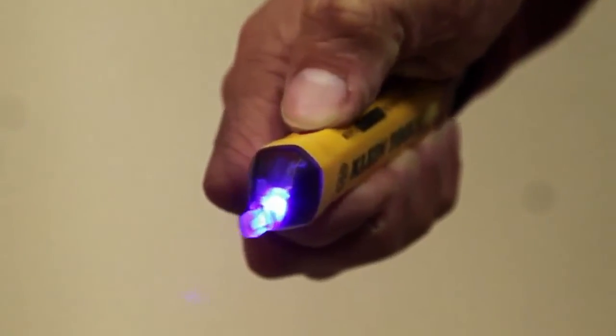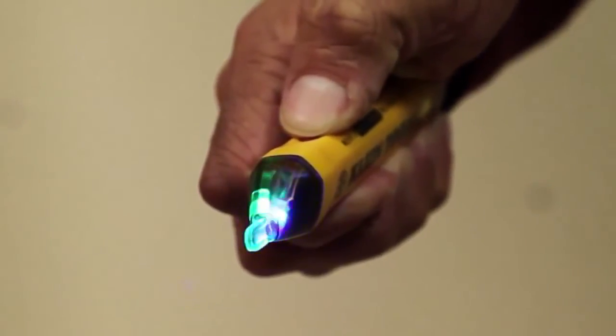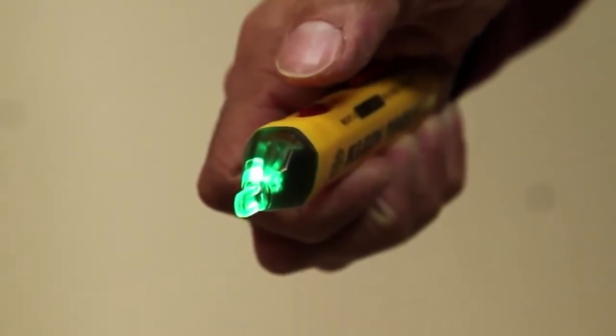Unlike competitive non-contact voltage testers, the NCBT2 can detect between the two ranges automatically.